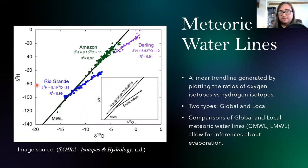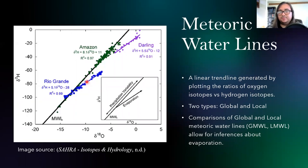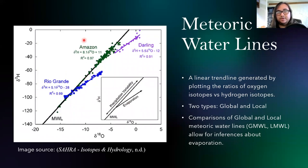By comparing localized data to this global average, we can learn a great deal. For example, this line plotted from measurements of the Rio Grande — comparing its slope to the slope of the Global Meteoric Water Line — tells us how much evaporation that water body has experienced. Because the slope of the Rio Grande line is below that of the Global Meteoric Water Line, that tells us it has experienced some level of evaporation. With more complicated analysis you can determine what percent of the water body has evaporated. The colored lines for the Rio Grande, Amazon, and Darling are called local meteoric water lines.